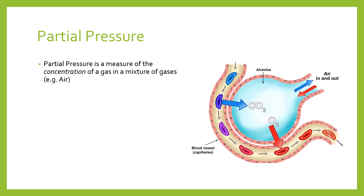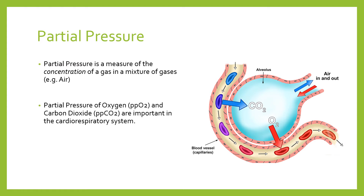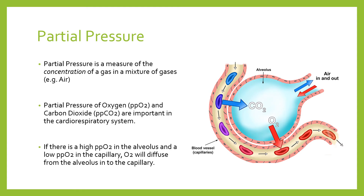To reiterate: partial pressure of oxygen, sometimes written as PPO2, and partial pressure of carbon dioxide, PPCO2, are important in the cardiorespiratory system. Those partial pressures dictate the diffusion gradient between the alveolus and the capillaries, or between the capillaries and the muscle tissue. If there is a high partial pressure of oxygen in the alveolus and a low partial pressure of oxygen in the capillary — which there is — oxygen will diffuse from the alveolus into the capillary.